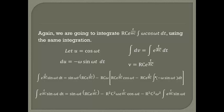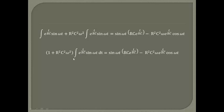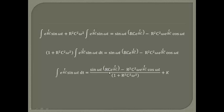Multiplying through and distributing ω·RC, we observe that the integral of e^(t/RC) sine(ωt) appears on both sides. Moving it to the left and factoring, we get (1 + R²C²ω²) times the integral of e^(t/RC) sine(ωt) dt, which equals RC · e^(t/RC) sine(ωt) minus R²C²ω · e^(t/RC) cosine(ωt), all over (1 + R²C²ω²), plus constant K.